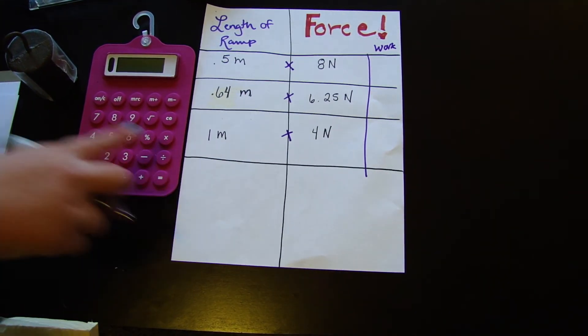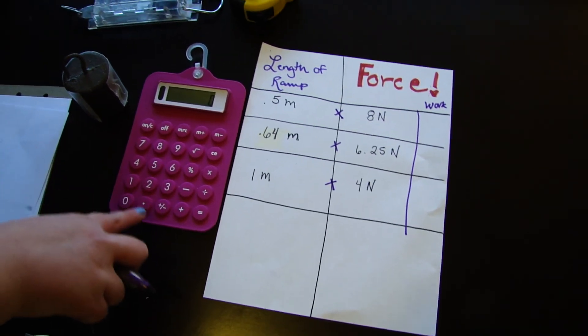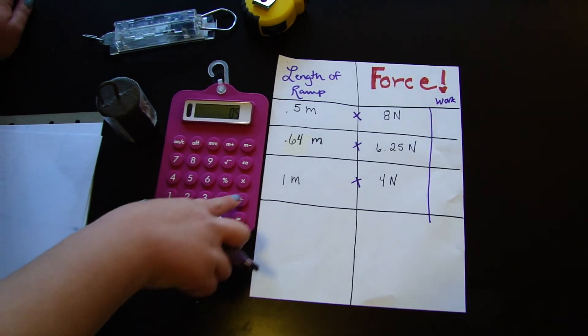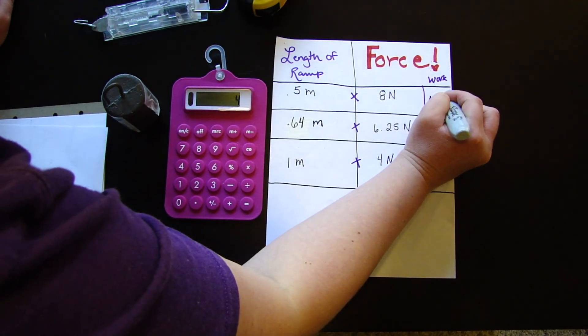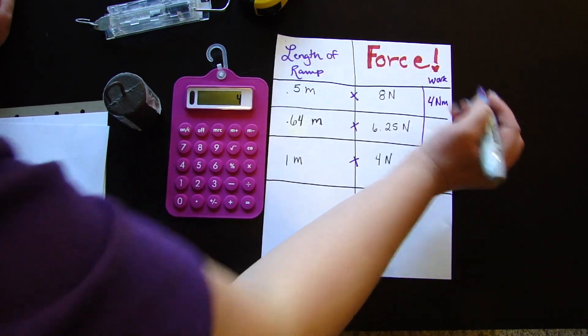And we know that we just multiply distance times force. So when I do that, let me make sure this is on. I'm going to take 0.5 times 8, which gives us 4 newton meters, or 4 joules.